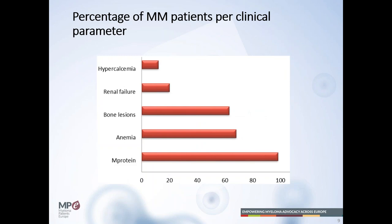Most patients with multiple myeloma have an M-protein, though some plasma cells do not secrete one. About 70% of patients have anemia, around 62% have bone lesions, 20% have renal failure, and about 10 to 12% have hypercalcemia.